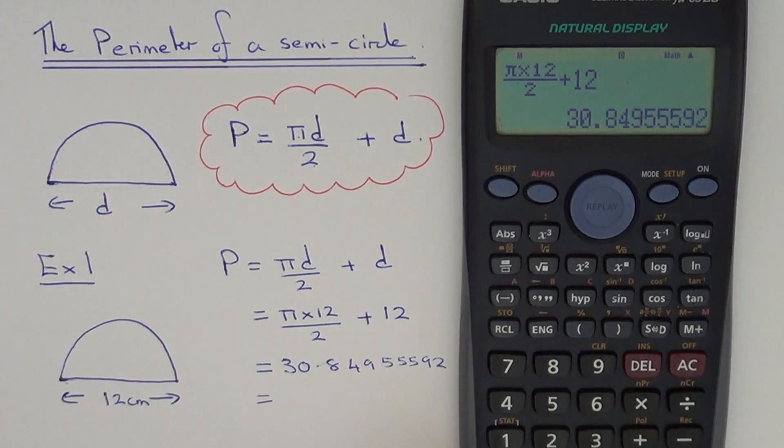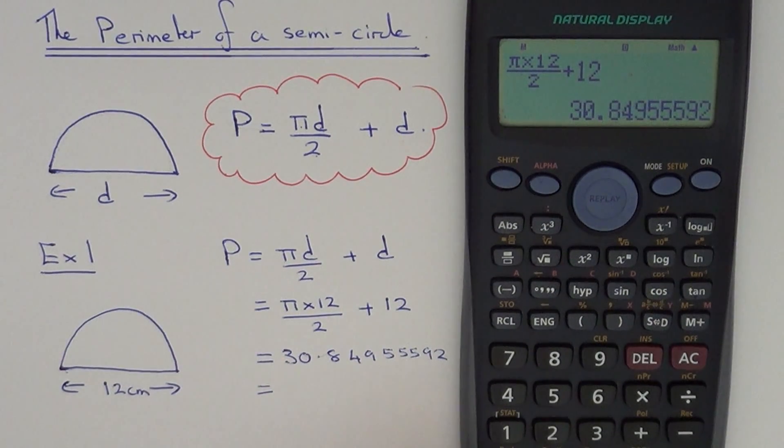So all we need to do now is just round that off. Let's go for three significant figures, so that would be 30.8cm.